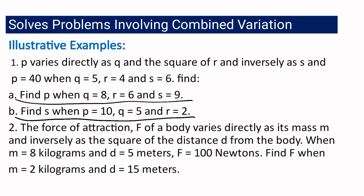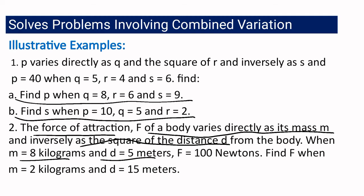For problem 2, the force of attraction f of a body varies directly as its mass m and inversely as the square of the distance d from the body. If the mass is 8 kilograms and the distance is 5 meters, the force is 100 newtons. What will be the force if the mass is 2 kilograms and the distance is 15 meters?